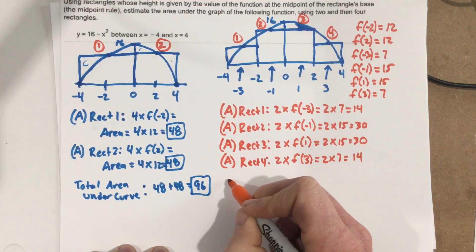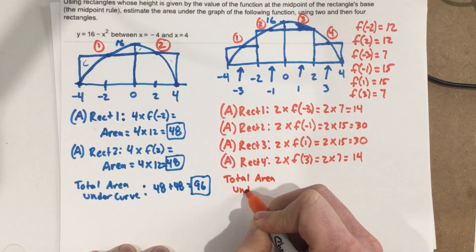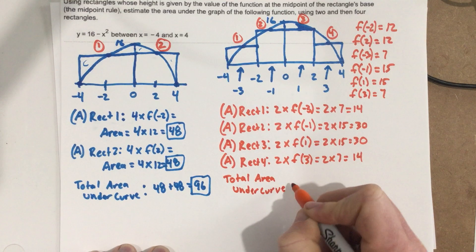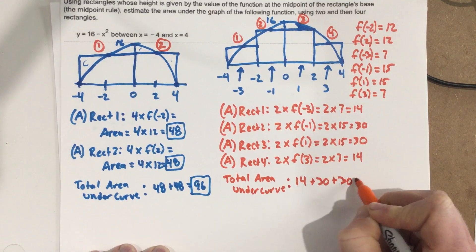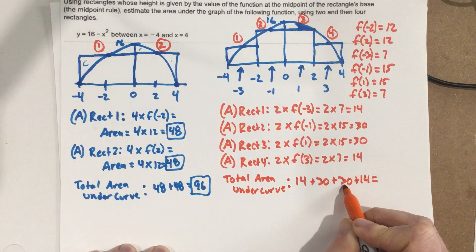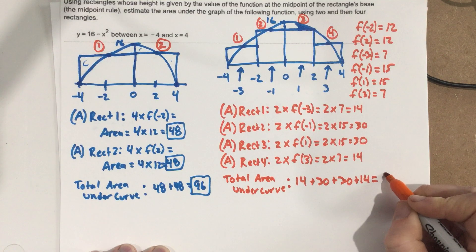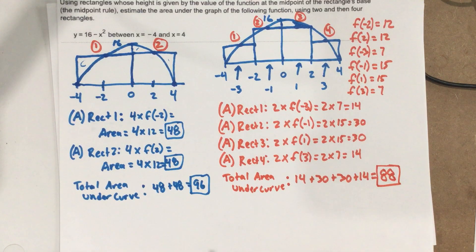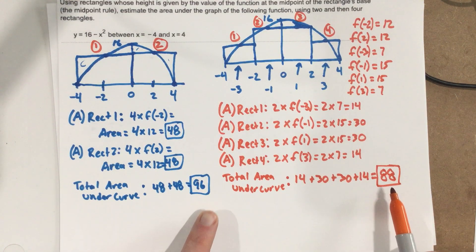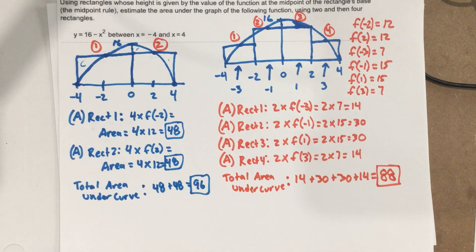Our total area under the curve is 14 plus 30 plus 30 plus 14, which is 88. We can see that the area changed between the two and four rectangle estimates. The four rectangles give a closer approximation, and if you continue to use more and more rectangles, you'll get a better and better approximation for the area under the curve.